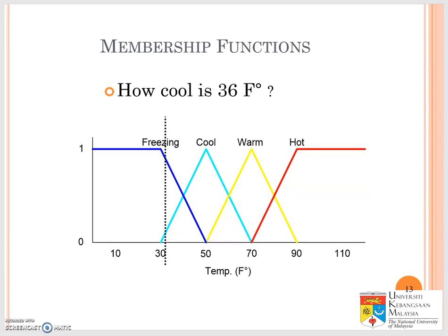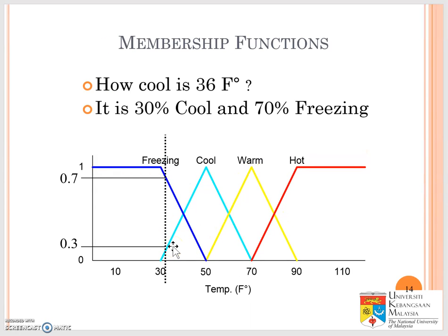Now, how cool is 36 degrees Fahrenheit? So we can project from the graph. Say 36 is here because we have 40 here — let's say this is 36. So if you project 36, we can say that it is freezing and also starting to go into the cool class. So if we read the membership function, we can say 36 degrees is actually 30% cool and 70% freezing — so most of it is still freezing but it's starting to become cool. We use a graph to predict what the output is.